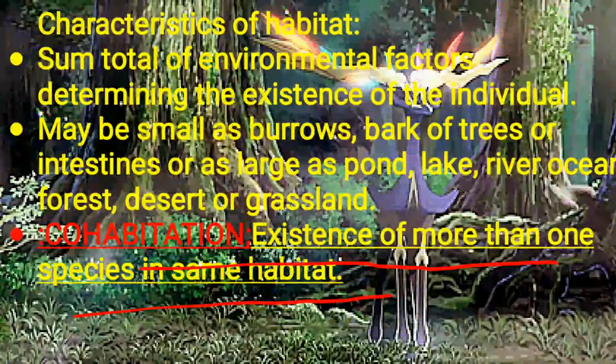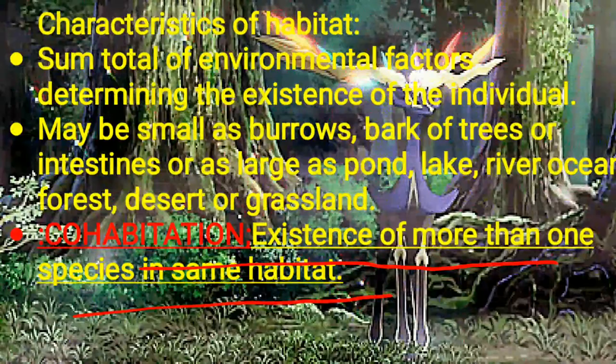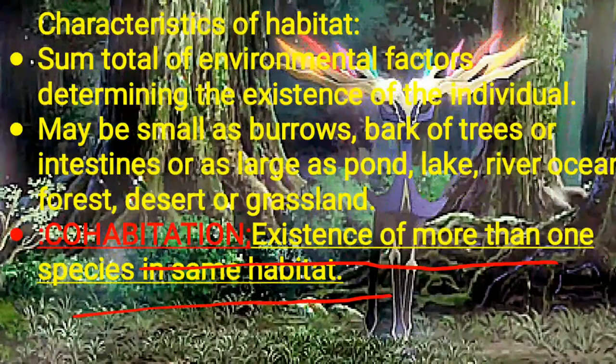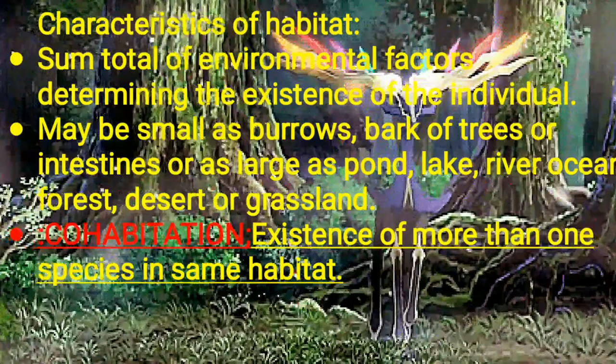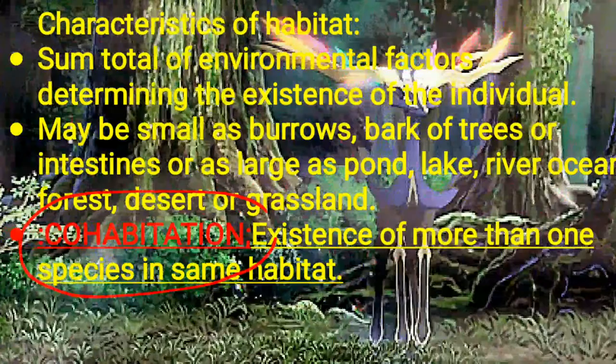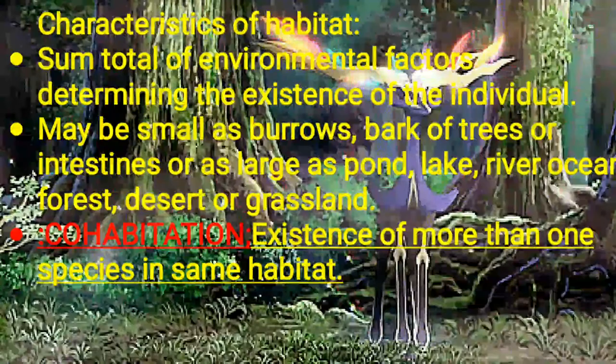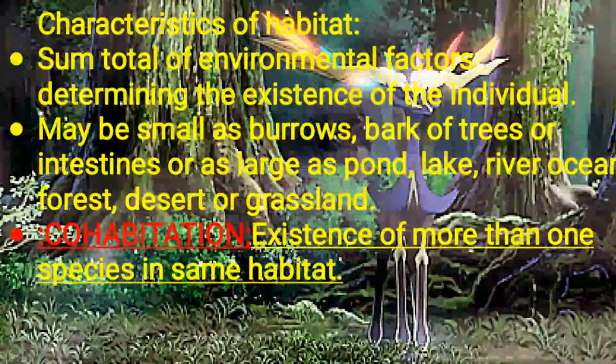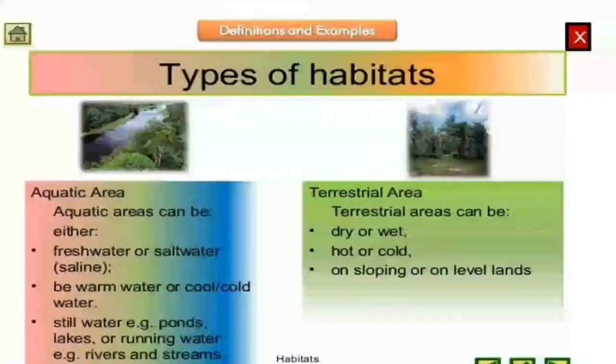If a particular place — such as a pond, desert, or forest — is occupied by an entire community, then the different species occupying that same habitat are said to be in cohabitation. These are the various characteristics of habitat, but sometimes very unique habitats are occupied by organisms.